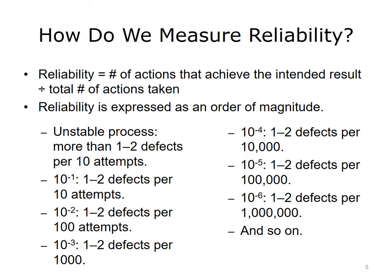To measure reliability, divide the number of actions that achieved the intended result by the total number of actions taken. Reliability measures are presented as an order of magnitude. An unstable process is defined as a process with more than 1 to 2 defects per 10 attempts. 10 to negative 1 describes a process with 1 to 2 defects per 10 attempts, and so on.